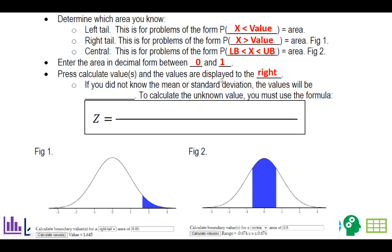Press calculate values, and then they'll be displayed to the right. Now, if you did not know the mean or the standard deviation, and that's what you're trying to find, the values you get will be z-scores.